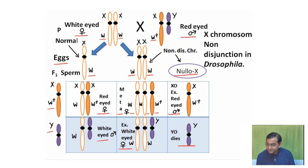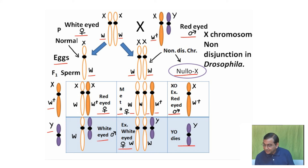Out of these six types, red-eyed females with two X chromosomes were normal. Meta-females or super-females were abnormal and died due to anatomical abnormalities. The XO red-eyed male, though male, was found to be sterile. The exceptional white-eyed male was found to be fertile and produced fertile exceptional white-eyed progeny. The YO male died.